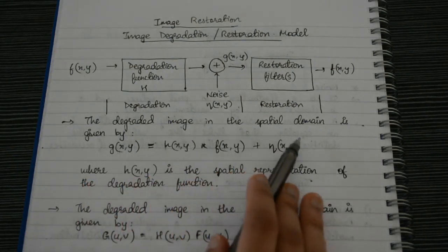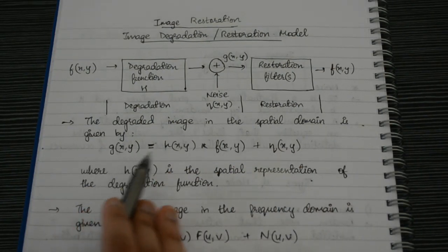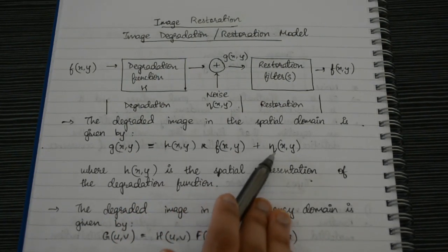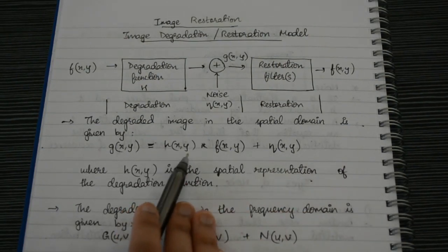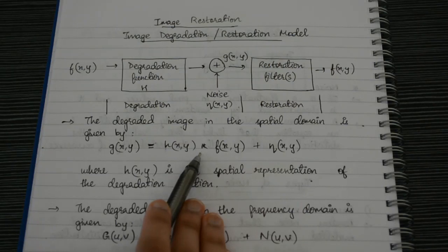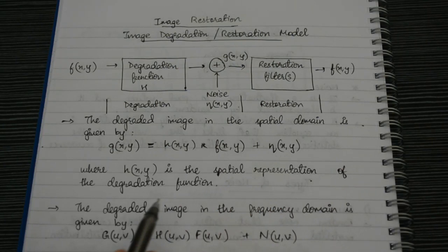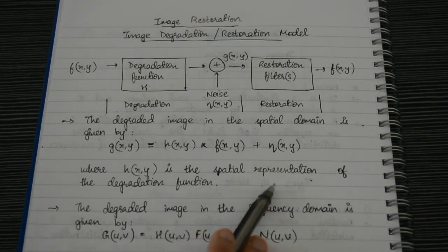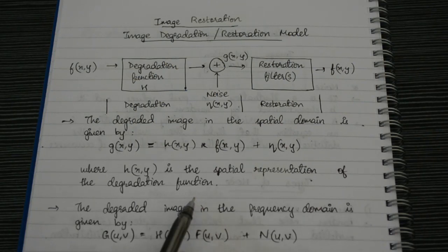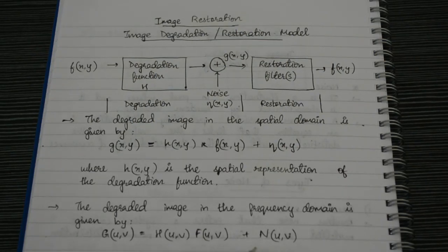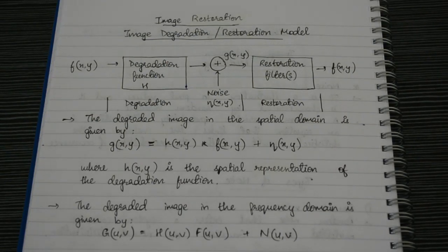The degraded image in the spatial domain is given by: g(x,y) = h(x,y) * f(x,y) + η(x,y), where h(x,y) is the degradation function convolved with the original image, plus added noise. The degraded image in the frequency domain is given by: G(u,v) = H(u,v) · F(u,v) + N(u,v). This was the image degradation and restoration model.